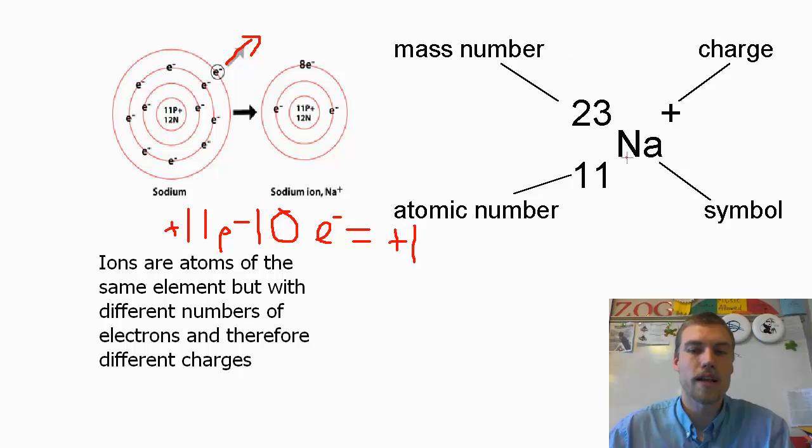All right, so how do we write that? So we've got our symbol, that's sodium. Our atomic number is still 11. We can't change the number of protons. If we change the number of protons, now we have a new element.